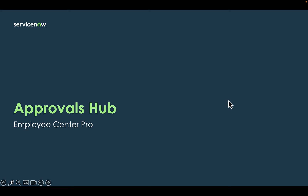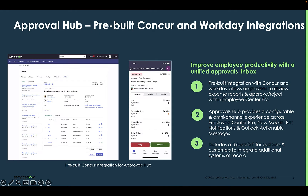This is an overview of our Approvals Hub functionality within Employee Center Pro. Approvals Hub is a framework that we built to create a unified approvals box that consolidates approvals from multiple third-party systems into the My Tasks view on Employee Center. It follows an architectural framework that creates an omnichannel experience with all the approvals being available,